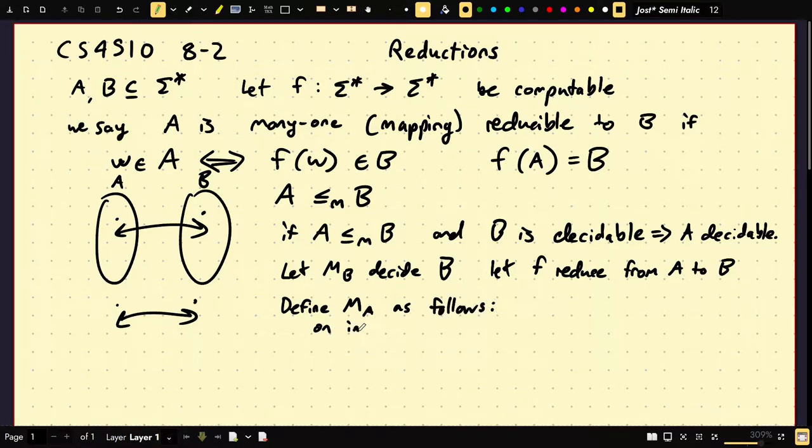On input W, compute F of W. Run M_B on F of W, and accept whatever it accepts, and reject whatever it rejects. Output, I'll say it this way to make things easier, return M_B on F of W.